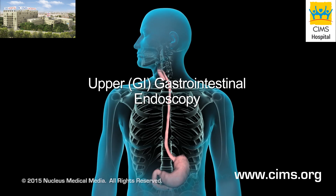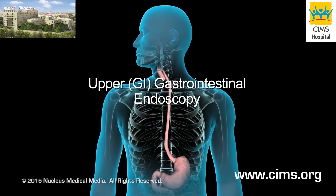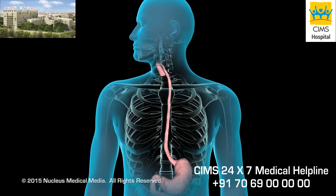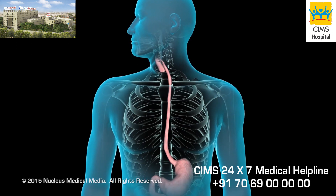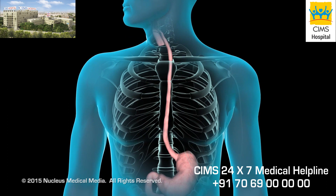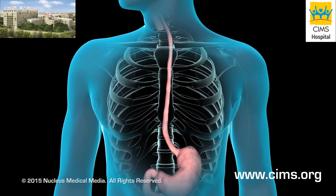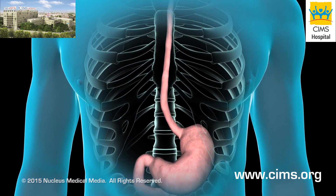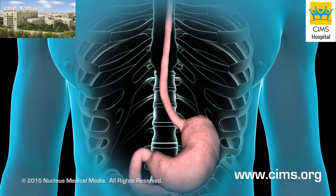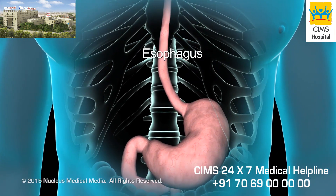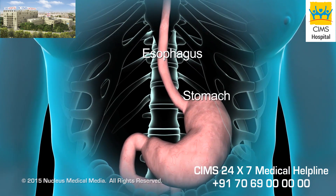An upper GI endoscopy, also called an esophagogastroduodenoscopy, or EGD, is a procedure that allows your doctor to view the mucosal lining of the upper portion of your gastrointestinal tract. This includes your esophagus, stomach, and duodenum.